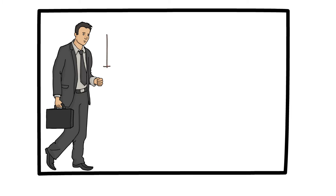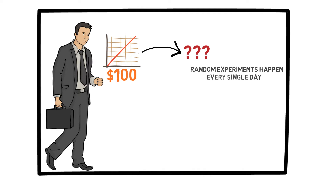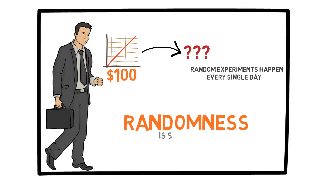Now let's say you purchased some stock in a company which today costs $100 per share. Because you don't know what the price is going to be tomorrow or one year from now with absolute certainty, this is also a random experiment. So nearly everything we do in real life can be defined as some sort of random experiment, because we are rarely ever certain about the outcomes of daily events. For the purposes of this course, randomness is simply the lack of certainty.